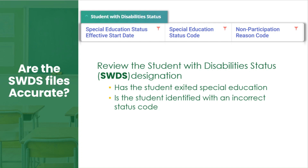SWDS files determine eligibility. Students appearing in the 1621 have an eligible and participating status. Often, SACE indicates a student exit that does not appear in CALPADS.